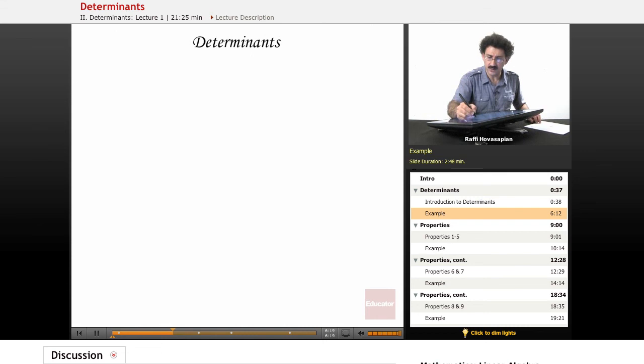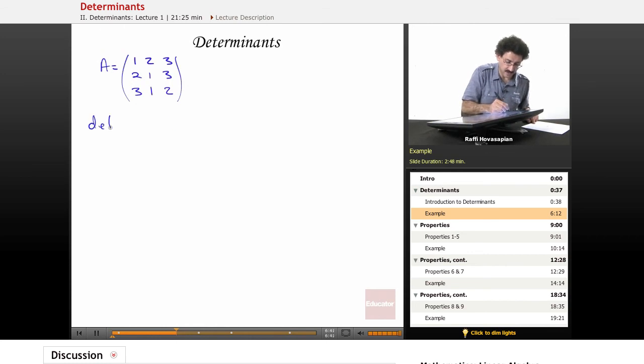Let's define A as 1, 2, 3, 2, 1, 3, 3, 1, 2. So let's do our pattern. Let's go ahead and put something like that. And we'll say the determinant of A.